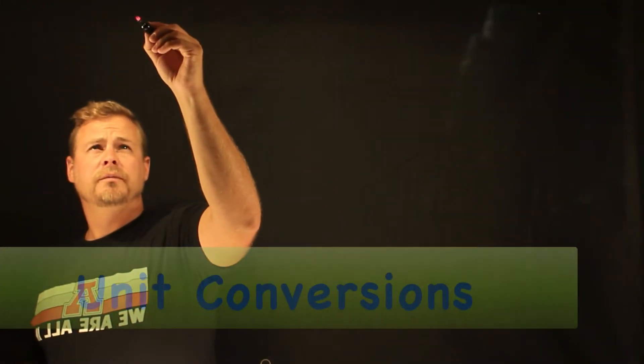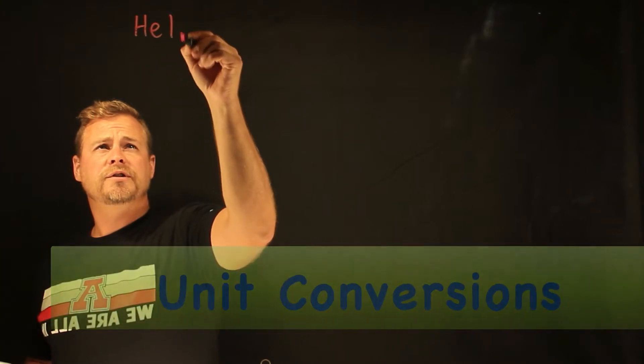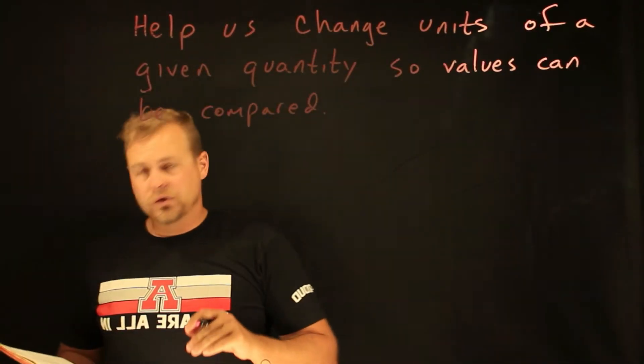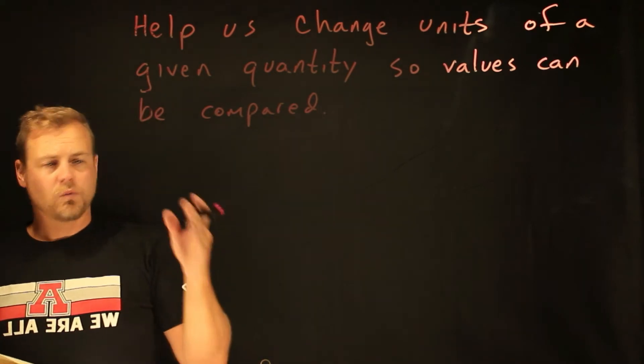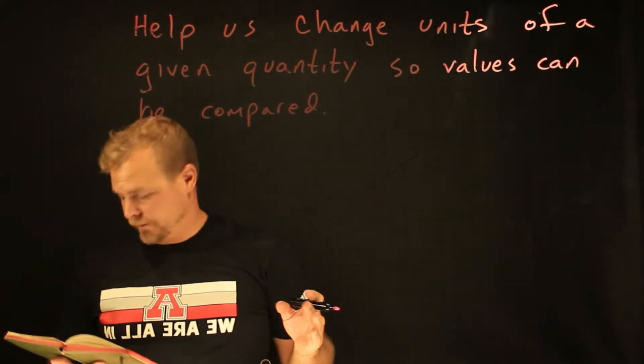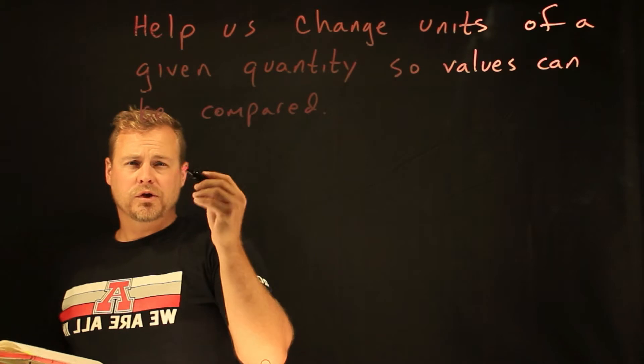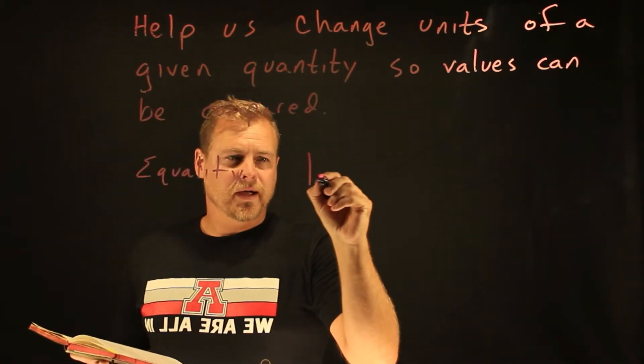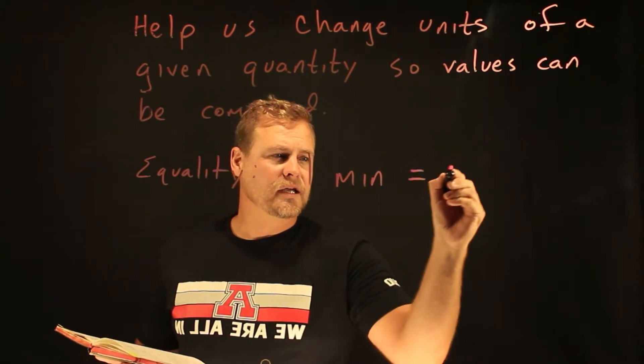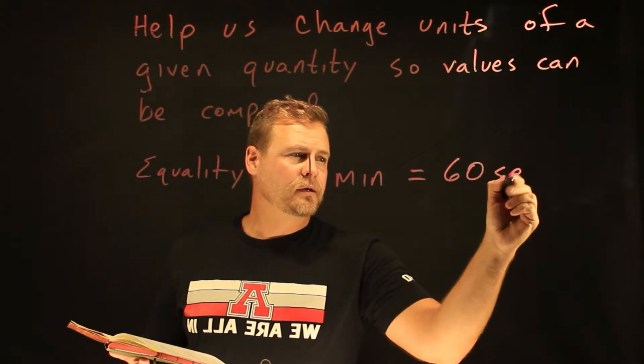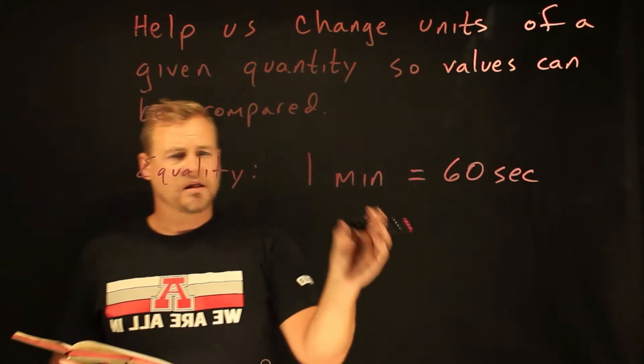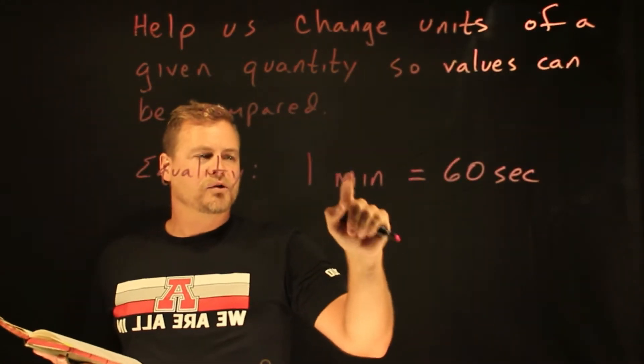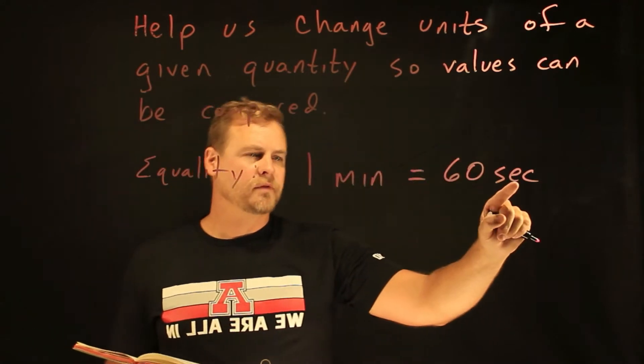Unit conversions. Unit conversions help us change from one type of unit to another type of unit. We use what's called an equality. Everybody knows that one minute is equal to 60 seconds. That is an equality. And you'll notice that I have a unit of time and a different unit of time.